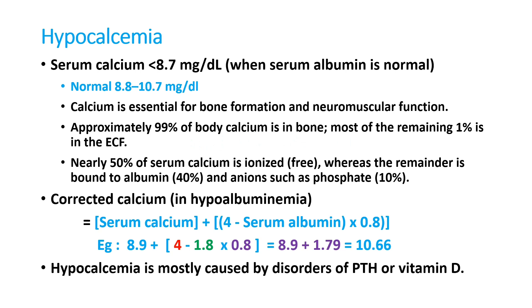Welcome to ATCM, the emergency medicine channel. Today we discuss hypocalcemia, which is defined as a serum calcium level less than or equal to 8.7 mg/dL. The normal value is around 8.8 to 10.7 milligrams per deciliter.